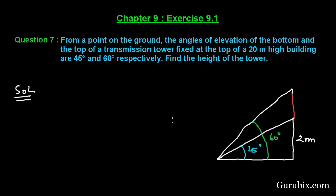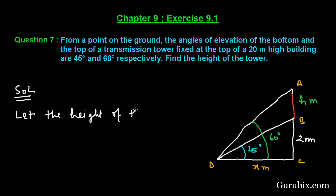We have to find the height of the transmission tower. Let the height of the transmission tower be h meters, and let this point be A, this be B, this be C, and this be D. The horizontal distance is x meters. So we let the height of the transmission tower equal to x meters.